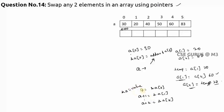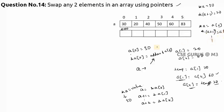Since 'a' holds the address of a[0], *a gives the value inside, which is 30. So *a = a[0]. And *(a+1) equals a[1], which is 20, since a+1 is the address of a[1]. We can conclude: *(a+k) = a[k]. So to swap, instead of a[1] write *(a+1), and instead of a[4] write *(a+4).